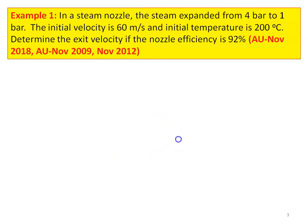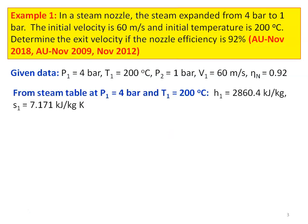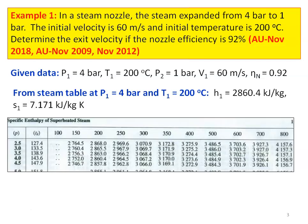We write down the given data: pressure P1 equal to 4 bar, temperature T1 equal to 200 degree Celsius, pressure P2 equal to 1 bar, velocity at the inlet V1 equal to 60 meters per second, and nozzle efficiency is 0.92. We have to refer to the steam table to take the steam properties for solving the problem.